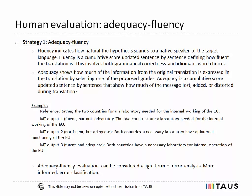Usually, these measures of generated translation are evaluated according to a 1 to 5 quality scale. Fluency indicates how natural the translation sounds to a native speaker of the target language. Adequacy is assessed after the fluency judgment is done, and the evaluator is presented with a certain reference translation and must judge how much of the information from the original translation is expressed in the translation by selecting one of the proposed grades.